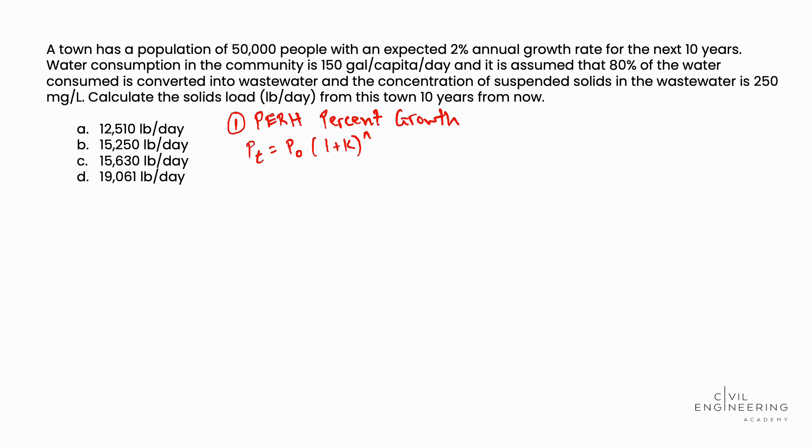So plugging in our variables, we have population at time 0, that's present day and we're told in the problem statement that's 50,000 people times the quantity 1 plus K, the annual growth rate of 2% which we'll change to a decimal so that's 0.02 raised to the N power, which N is the number of years. We're given that's a 10-year period. And so performing that calculation, we determined that P at time 10 years from now is equal to 60,950 people.